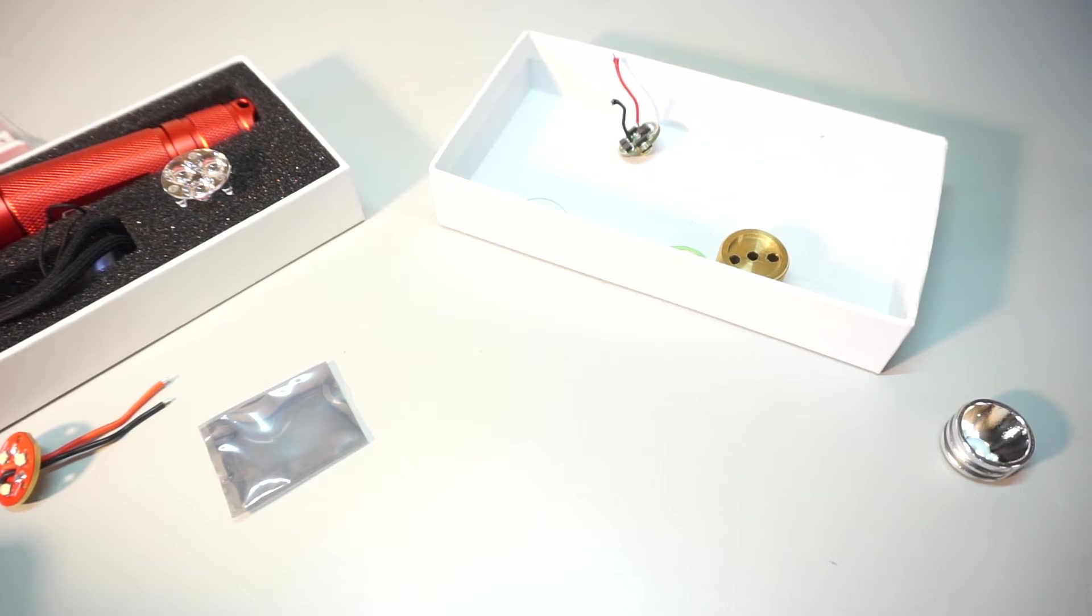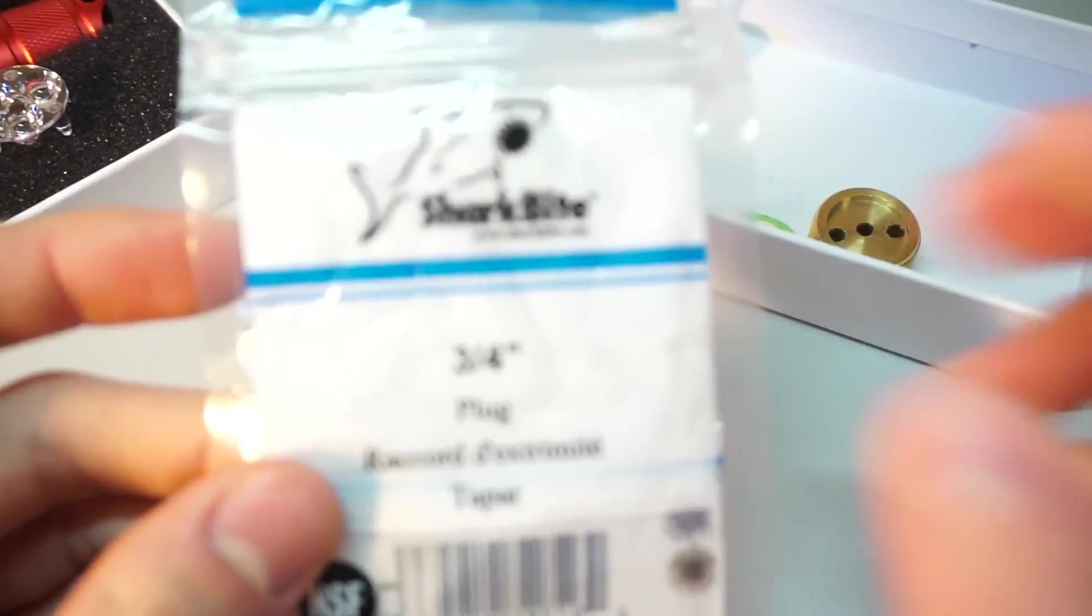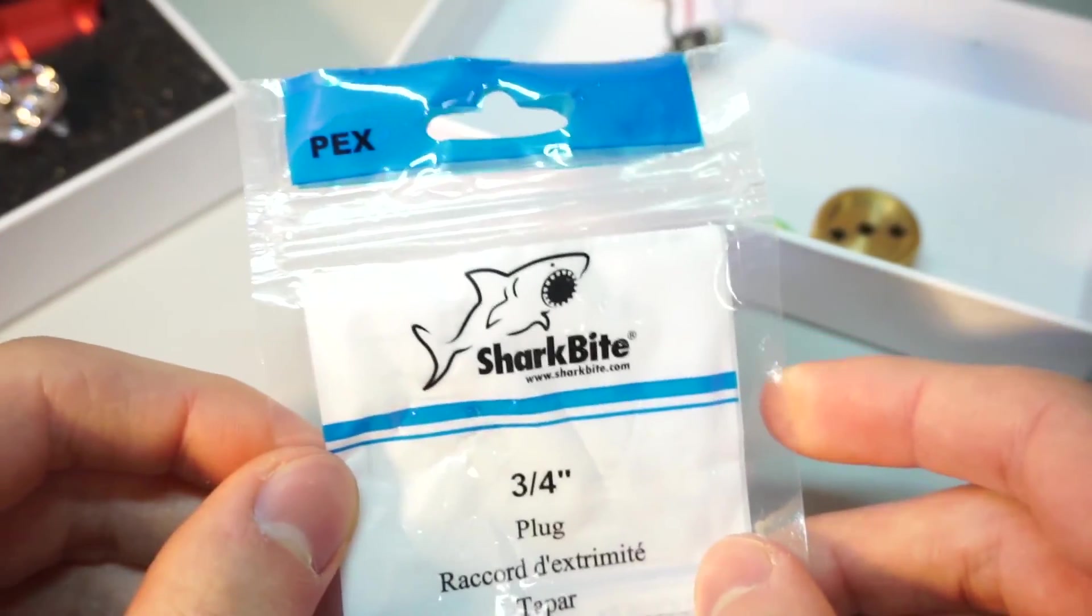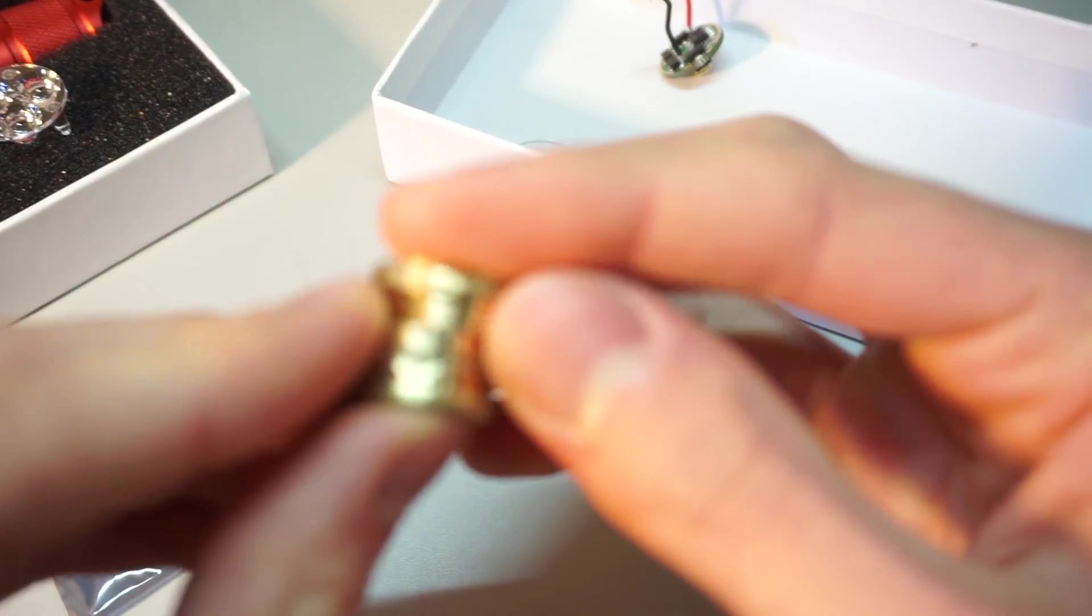There are pre-made spacers you can buy on the internet, although they are pretty expensive. So what I did was I went to my local home improvement store to the plumbing department and picked up this. It's a three-quarter inch PEX plug made by SharkBite. It was $1.50 if I recall correctly.